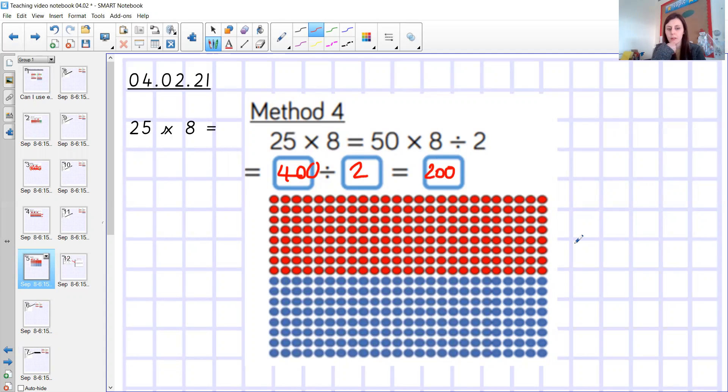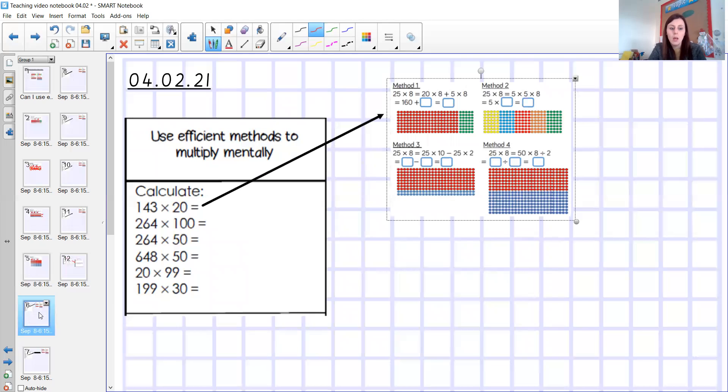Have a little watch back through this if you're still confused. But if you're with me and you're 100% that you understand the four different methods, then we can move on and we can have a look at how we would apply this methodology to today's do it. So these are slightly different numbers, not as straightforward as 25 times 8. However, you can still apply the same methodology or adapt it to work. Because remember, our can I is, can I use the most efficient method to multiply mentally.